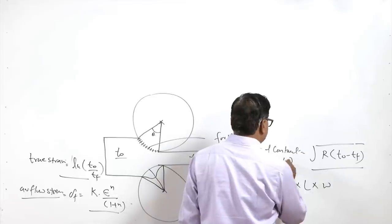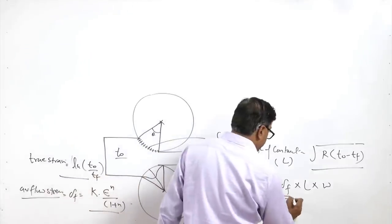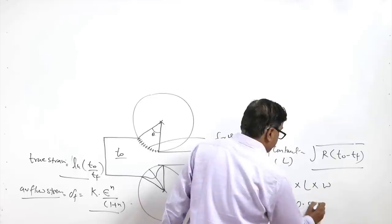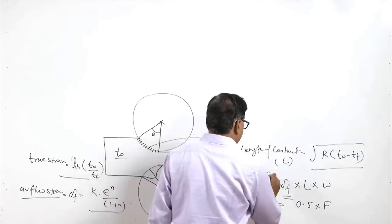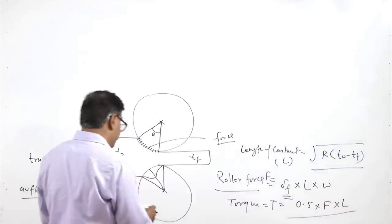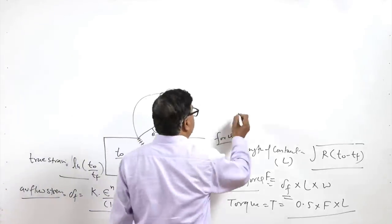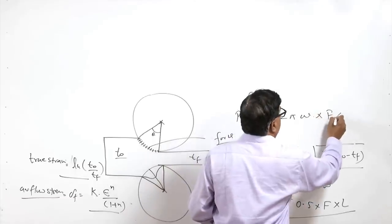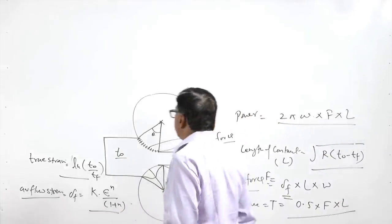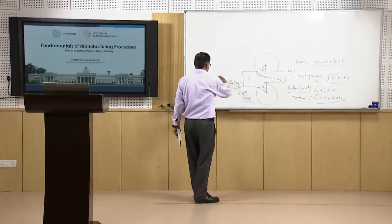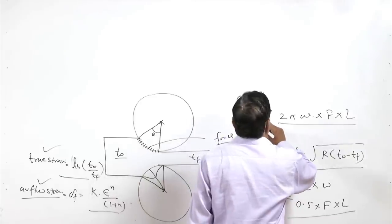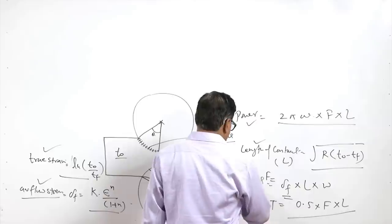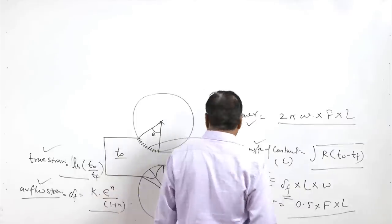The rolling force F is obtained from the product of flow stress σF multiplied by the contact length L multiplied by the width W of the plate. The torque T can be calculated using: T = 0.5 × F × L (contact length). The power for rolling can be obtained using: Power = 2π × ω × F × L, where ω is the rotational speed.